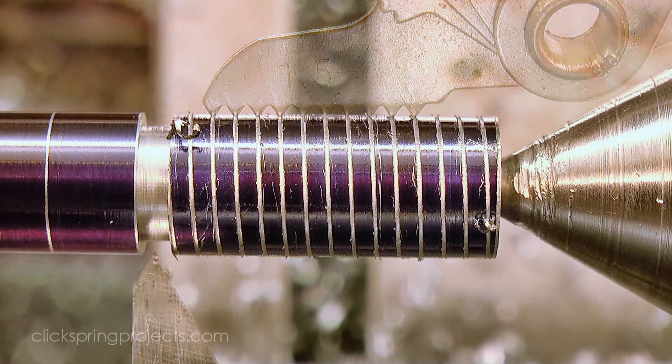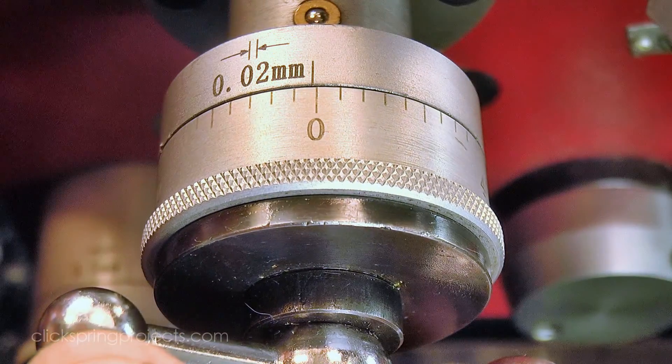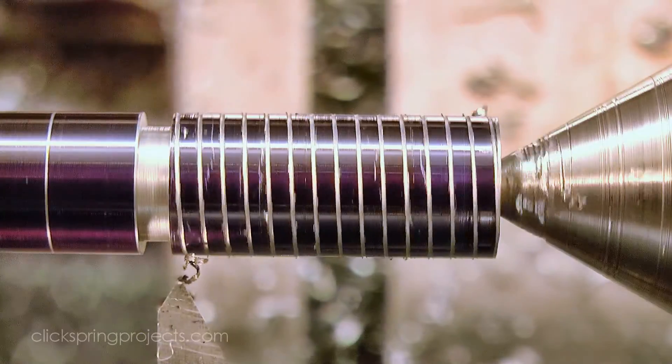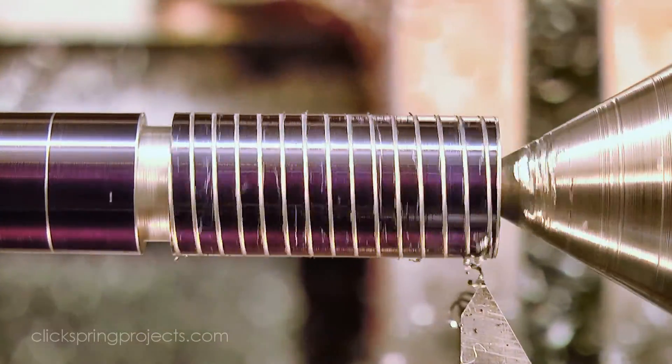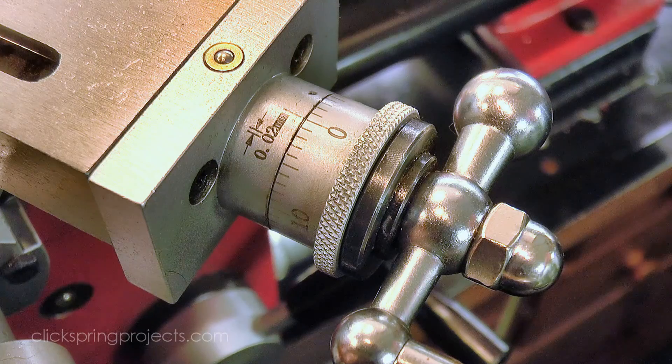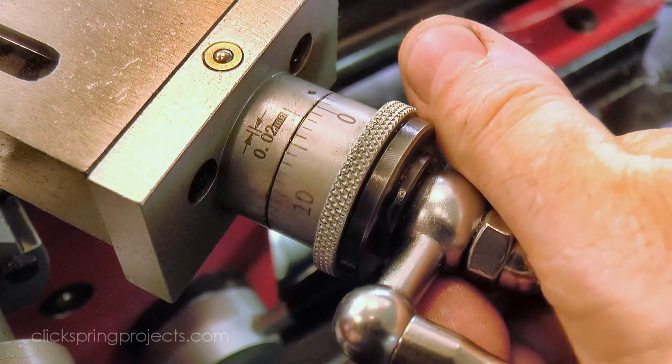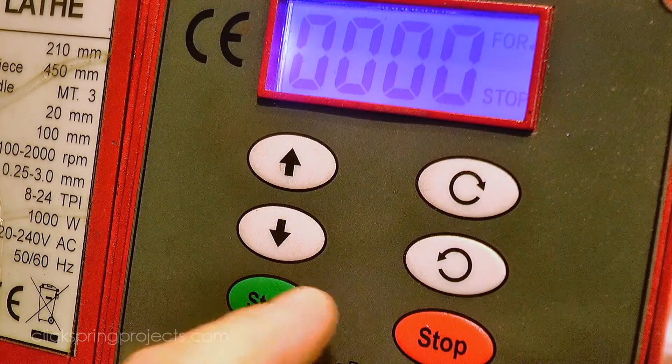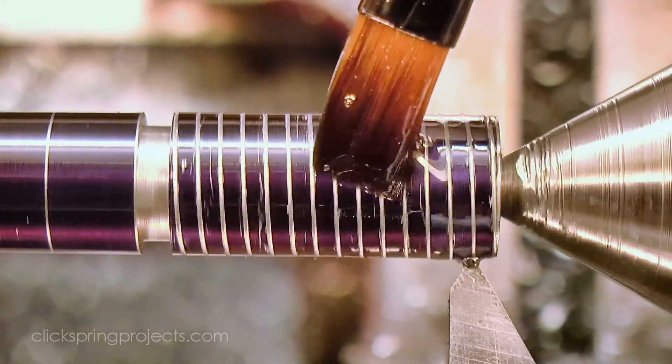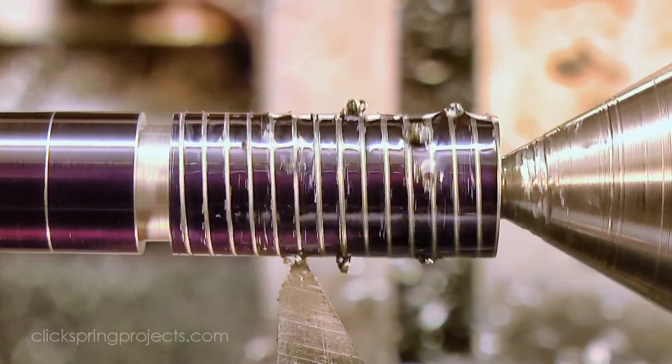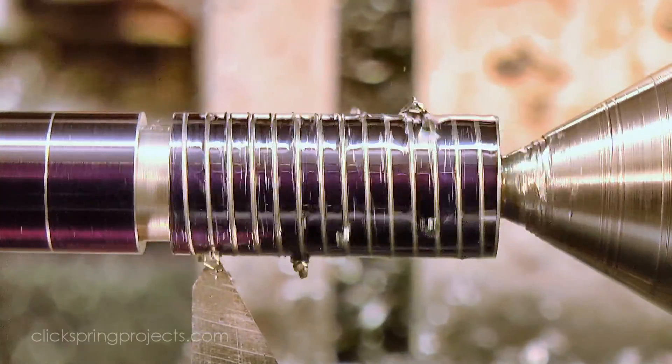Once confirmed, the tool is retracted, and the carriage returned to a position just prior to the starting point of the thread. The cross slide is returned to the zero position, and then a small cut is put on by winding in the top slide handwheel. With each successive pass, the cut is gradually increased, by continuing to feed in with the top slide, and the process is repeated until the thread is formed to full depth.